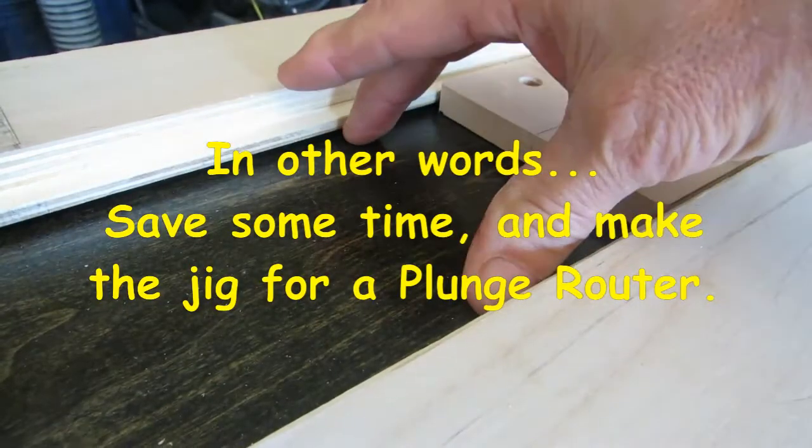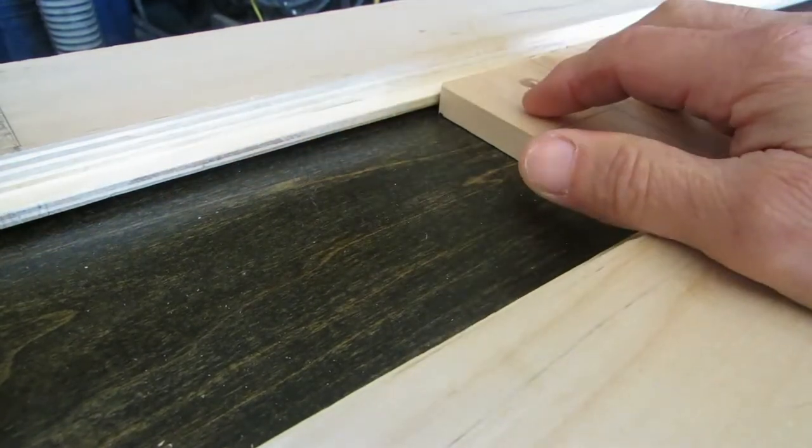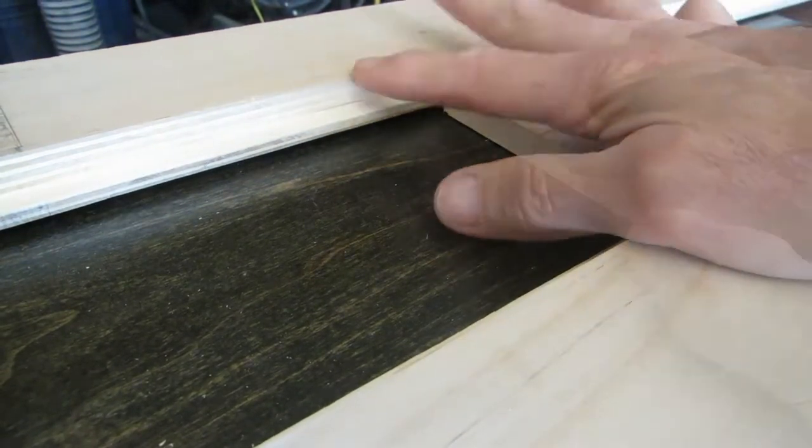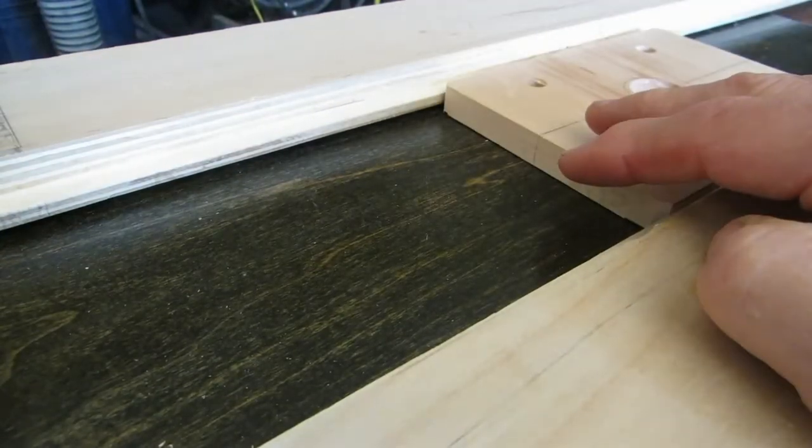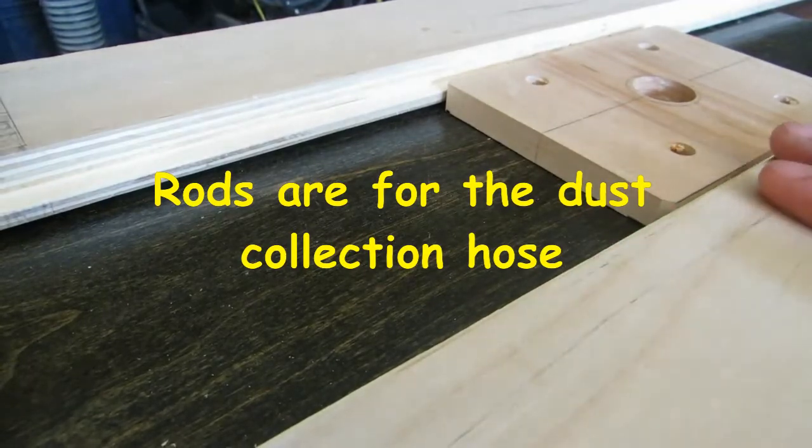If you use the DeWalt plunge router base to make your jig, make this piece half inch and you won't have to make this spacer. And then you just increase this to the width of the plunge router.